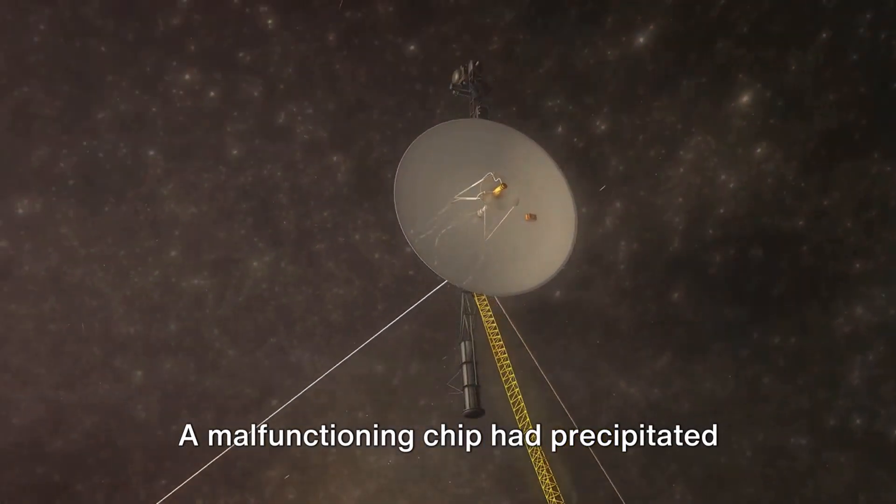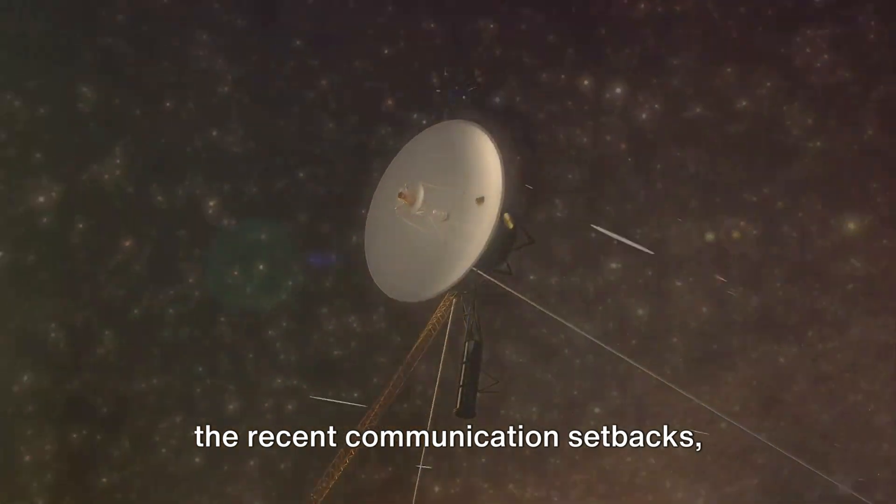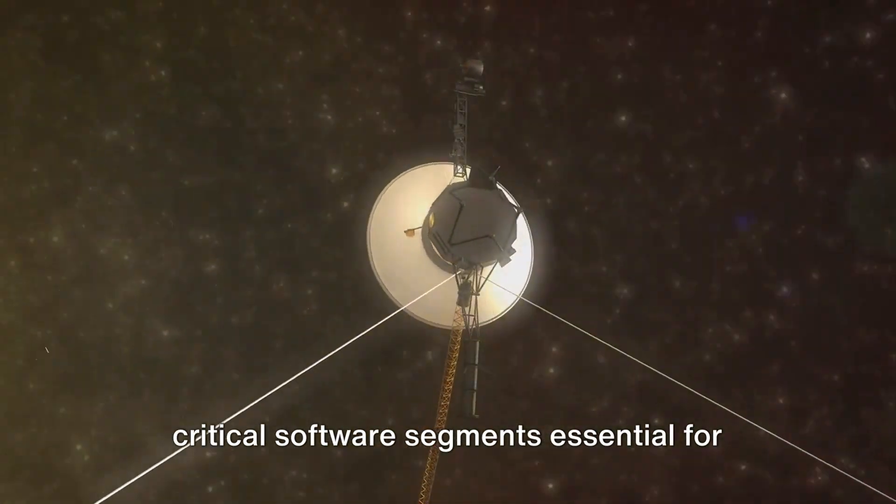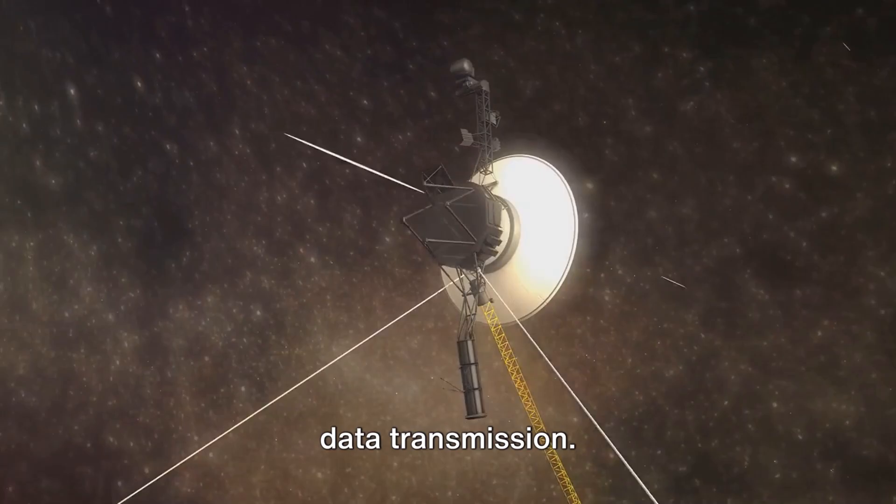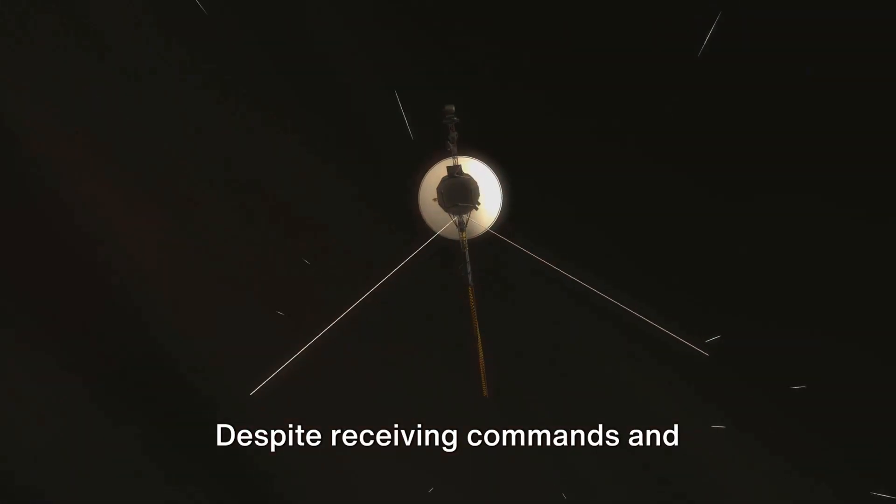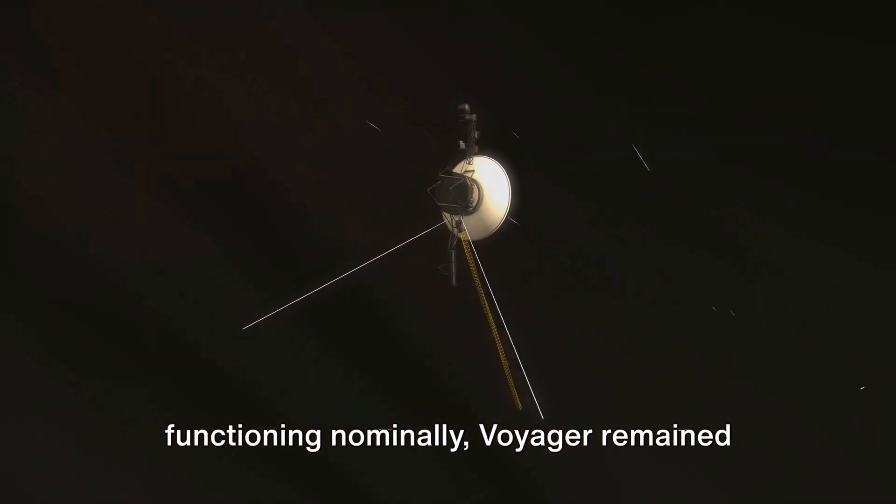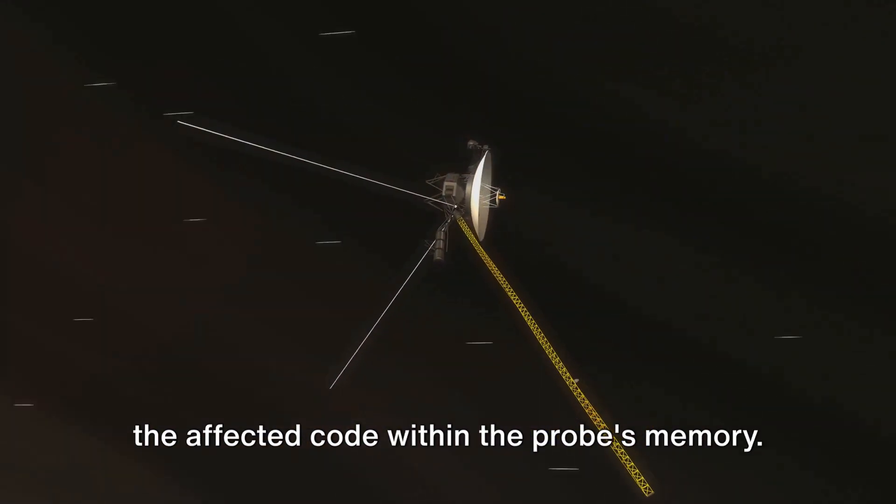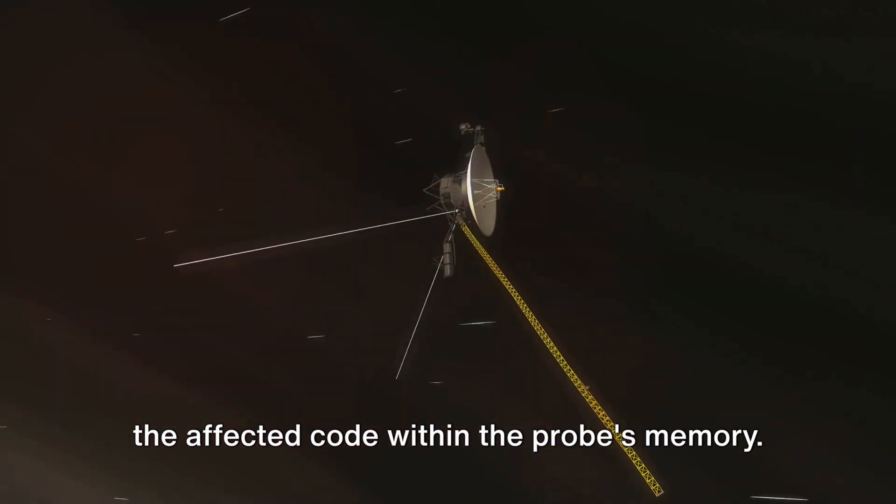A malfunctioning chip had precipitated the recent communication setbacks, impeding the spacecraft's access to critical software segments essential for data transmission. Despite receiving commands and functioning nominally, Voyager remained incommunicado until engineers reallocated the affected code within the probe's memory.